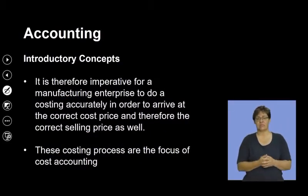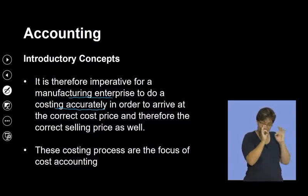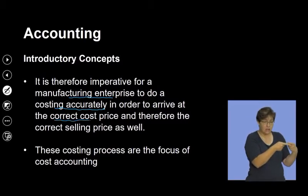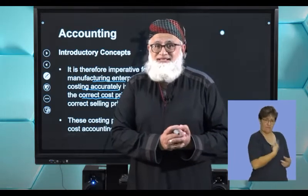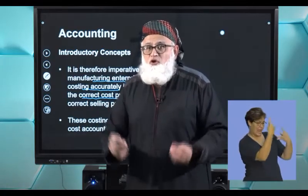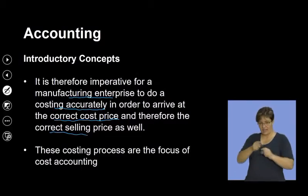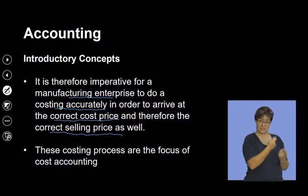It becomes absolutely critical for a manufacturing enterprise to do their costing accurately. They need to know exactly what costs were incurred in manufacturing that particular item, in order to arrive at the correct cost price. Because you are manufacturing the product, you're making it and attaching a cost price to each of its components, and thereafter you're going to sell that product. This determines the correct selling price as well — only once you determine the cost price can you work out the correct selling price.